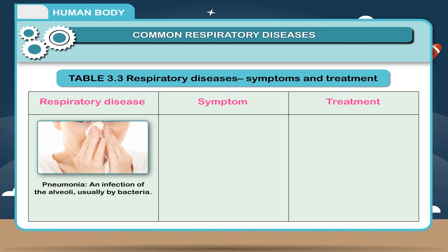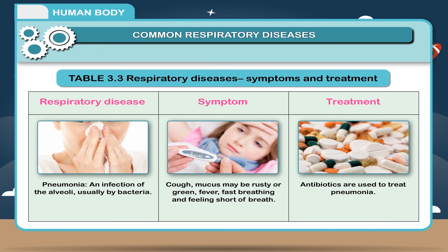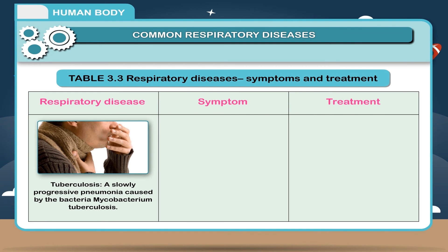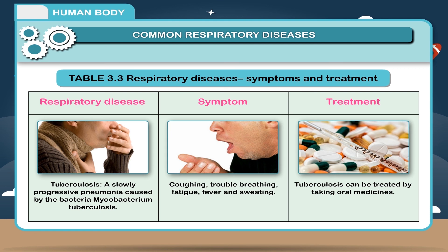Pneumonia: An infection of the alveoli, usually by bacteria. Symptoms include cough, mucus that may be rusty or green, fever, fast breathing, and feeling short of breath. Antibiotics are used to treat pneumonia. Tuberculosis: A slowly progressive pneumonia caused by the bacteria Mycobacterium tuberculosis. Symptoms include coughing, trouble breathing, fatigue, fever, and sweating. Tuberculosis can be treated by taking oral medicine.